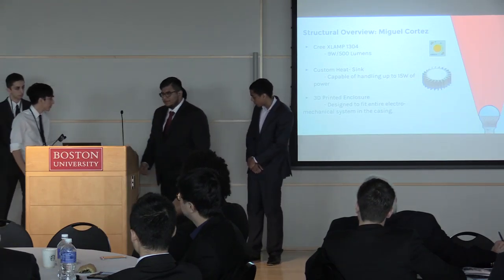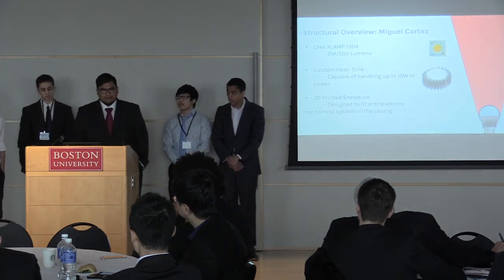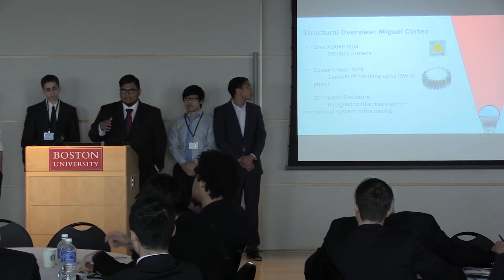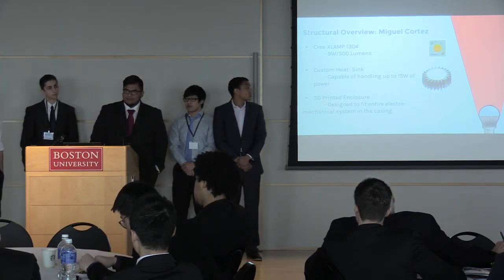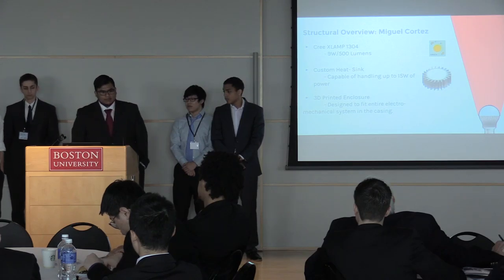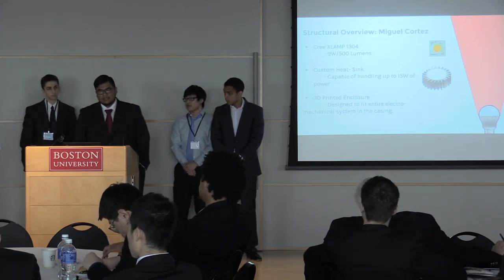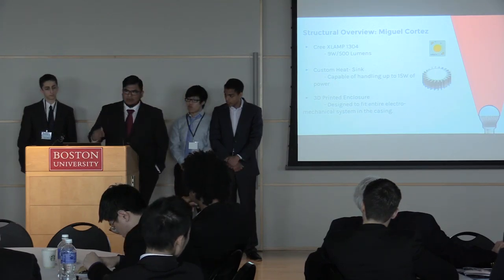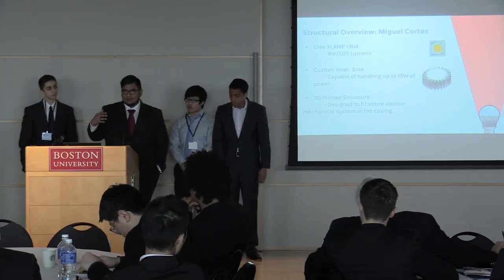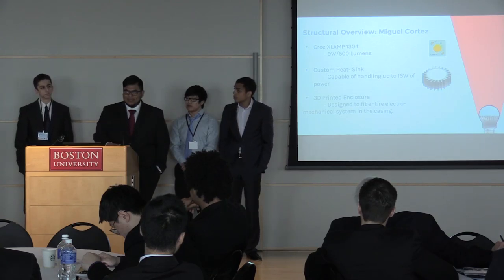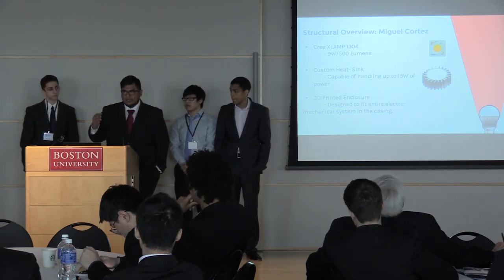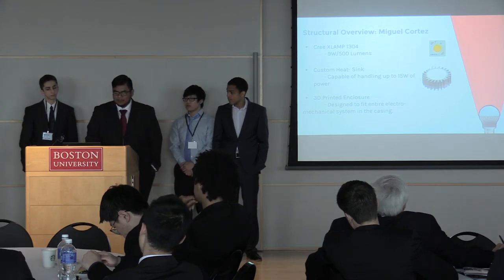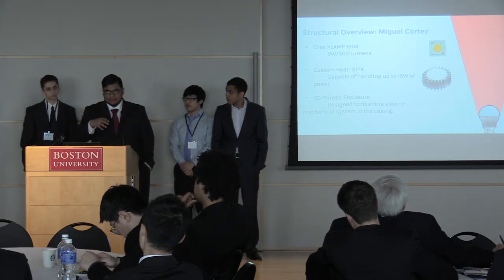My name is Miguel. My part focused on the LED, the heatsink structure, and the enclosure itself. We used a high-density LED — a Cree X-LAMP 1304, which is a 9-watt LED, equivalent to a 30-watt traditional bulb — producing 500 lumens, while typical household bulbs are 700 to 1,000 lumens. We just wanted something bright enough to demonstrate directionality.